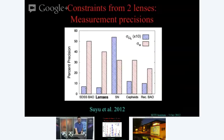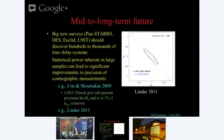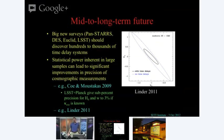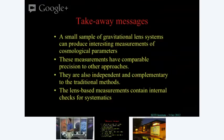Lots of big surveys are coming — Panstarrs, dark energy survey, Euclid, LSST — going to give us thousands of time delay systems. Because each lens is independent, we'll really be able to get nice constraints from lensing. The takeaway message for this part of the talk: with a small sample of lenses you can make interesting measurements of cosmological parameters with precisions comparable to other approaches. They're independent and they contain internal checks for systematics.